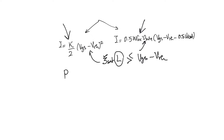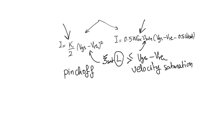We call the long-channel mechanism pinch-off saturation, and the other one velocity saturation. Any current — ohmic, saturation, any kind — is the product of two things: the charge density at a certain point multiplied by the velocity at which that charge density moves. Once one of these two components saturates, the current will saturate. If the charge in the channel saturates, we see pinch-off saturation. If the velocity at which the charge moves saturates, we see velocity saturation.